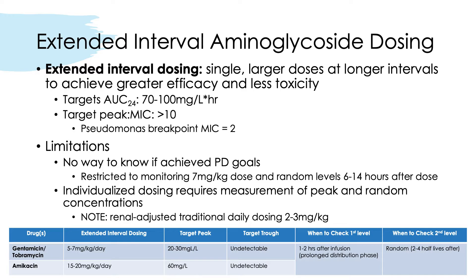Extended interval aminoglycoside dosing refers to administering a single larger dose at longer dosing intervals to achieve greater efficacy and less toxicity. You target an AUC between 70 to 100 and a peak-to-MIC ratio greater than 10. This maximizes early concentration for greater killing activity while decreasing renal and inner ear tissue uptake of aminoglycoside, since that process is saturable, thereby reducing the risk of nephrotoxicity and ototoxicity. However, limitations include uncertainty about whether pharmacodynamic targets are achieved, and individual dosing requires measurement of peak and trough concentrations around 2 to 4 half-lives after dosing. This may not apply to certain conditions like meningitis or endocarditis.